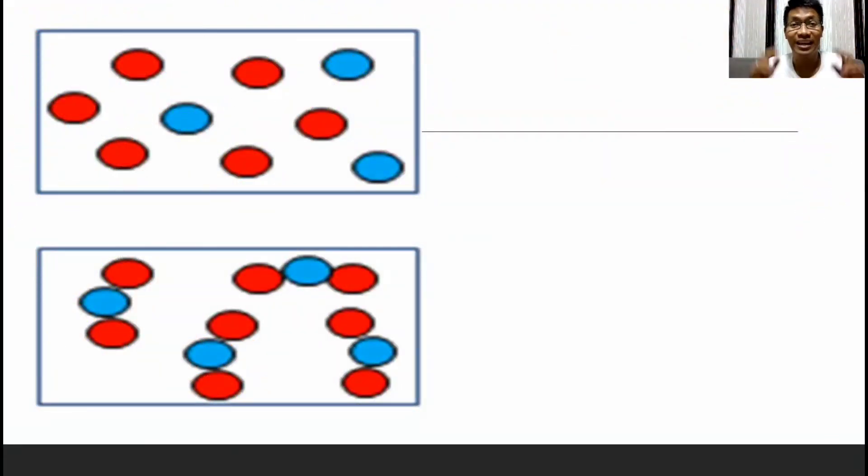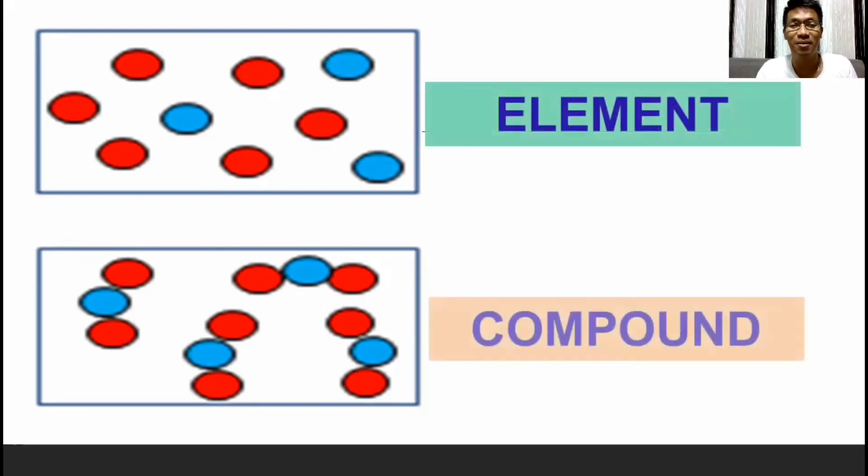Most of the time, we are using illustrations or representations for substances. And again, for this case, we got elements and compounds. As we try to analyze the diagram or illustration, for elements, kung natatandaan natin, it is composed of single type of atom. So, ang red ay isang element at ang blue ay another element. For compounds, we know that it is composed of two or more types of atoms that are chemically combined together. Each molecule is composed of two atoms which are color red and one atom which is color blue, and they are chemically combined together.